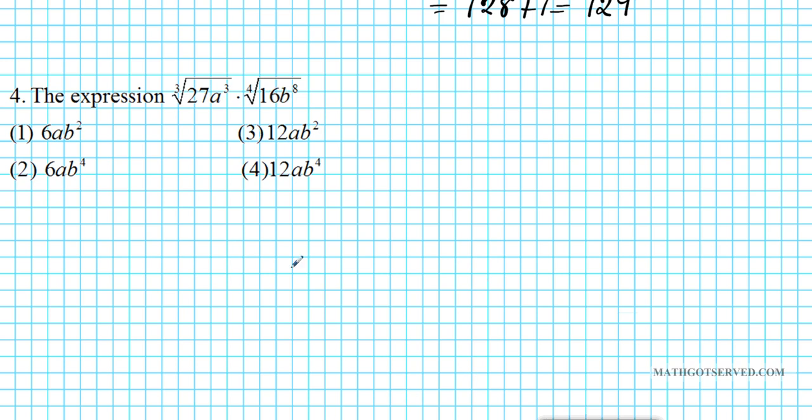Let's take a look at problem 4. This is the expression, the cube root of 27a to the 3rd times the 4th root of 16b to the 8th. In order to escape from the radicand, the power of the radicand must match the root that you're taking.